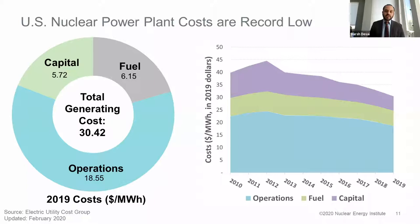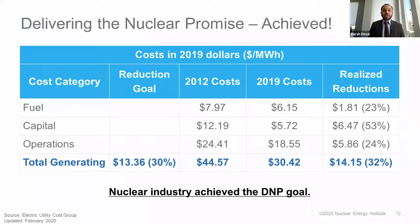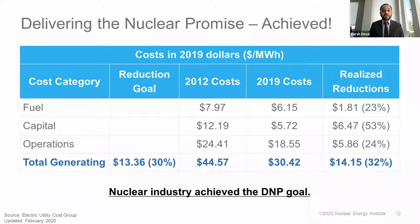I want to highlight something called Delivering the Nuclear Promise. This was an initiative launched in 2015 to bring the cost of nuclear power down by 30% compared to 2002 levels by the end of the decade. We have done it — we've actually reduced the cost by 32%. This is something the industry should be very proud of: we went out and said we would reduce our costs, and we've gone through and done that.